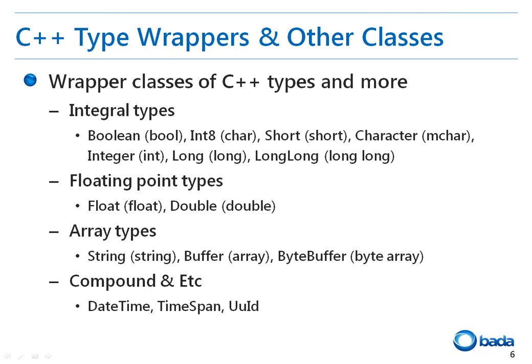In the base namespace, the wrapper classes for C++ types are implemented. The following integral types have been implemented: Boolean, int8, short, character, integer, long, and long long. The float and double floating point types have also been implemented. Additionally, the string, buffer, and byte buffer types have been implemented so that they can be used for arrays. Also, the dateTime, timeSpan, and UUID types have been implemented.